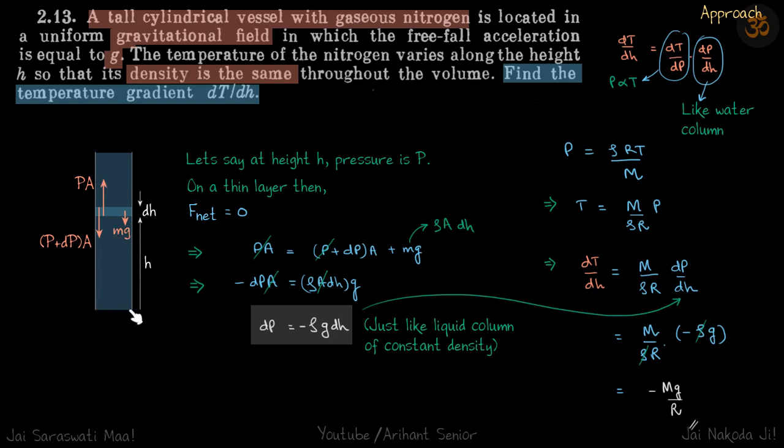So let's say this is the column. From the bottom at the height H, let's take a small gaseous element of height dH. So at the height H let's say the pressure is P. So at the bottom layer of this element the pressure is P. So the force on this layer upwards is PA, and on the top layer let's say the pressure is P plus dP. So the force on the top layer because of the pressure just above it is P plus dP into A downwards, and because of the mass of the gas itself there is downward force mg.